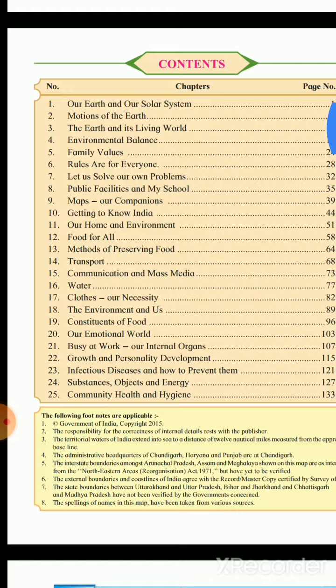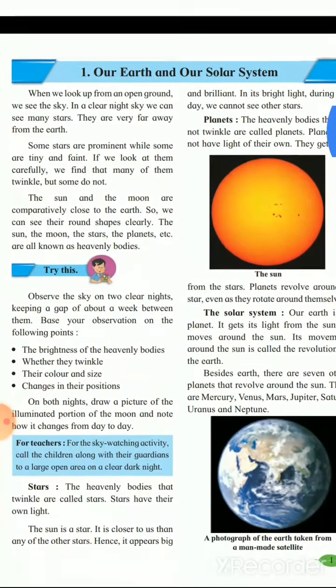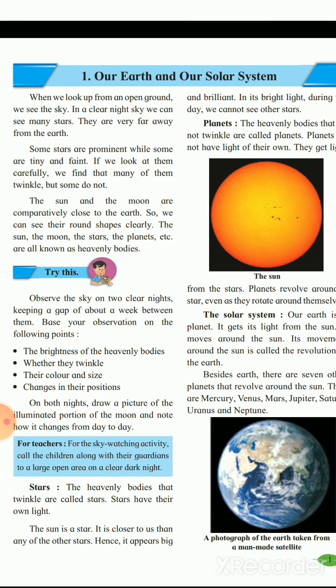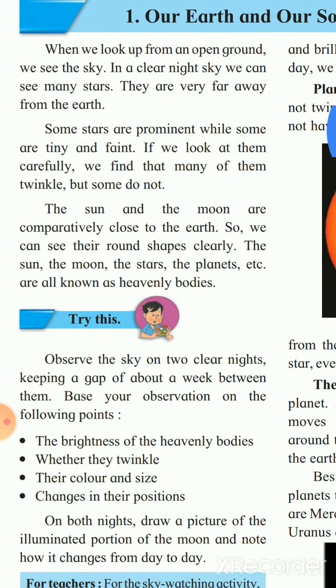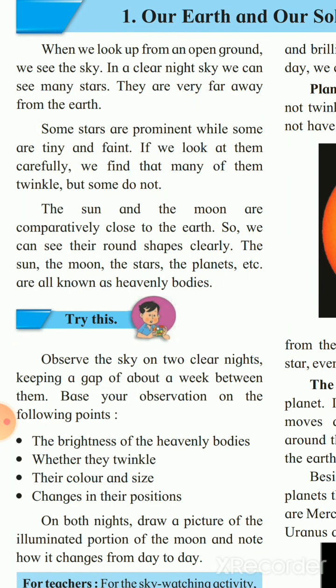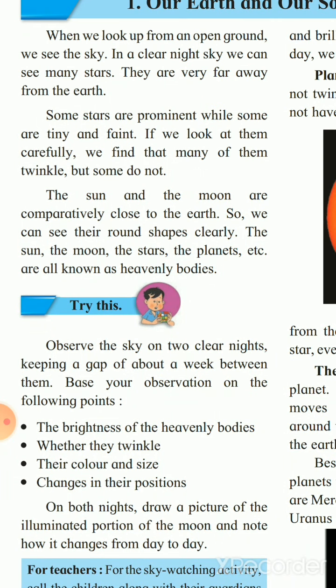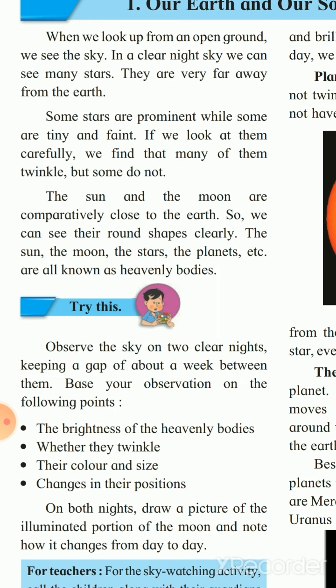Students, all of you know our Earth and our solar system. When we look up from an open ground, we see the sky. In a clear night sky we can see many stars. They are very far away from the Earth. Some stars are prominent while some are tiny and faint. If we look at them carefully, we find that many of them twinkle but some do not.